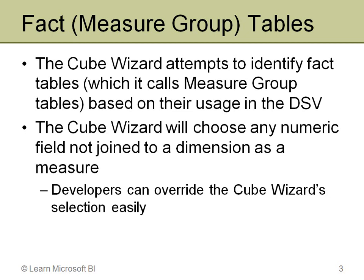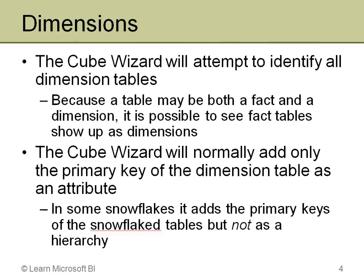Then, on the next screen, any columns in the fact tables that are numeric and that aren't used as keys to tie to dimension tables become suggested measures. You can easily uncheck any that are incorrect.